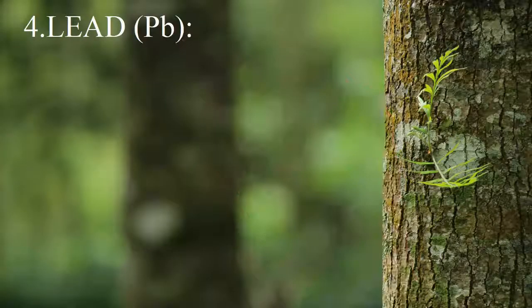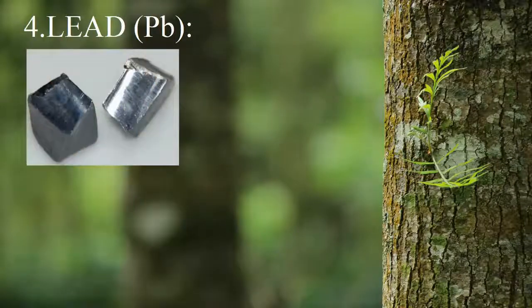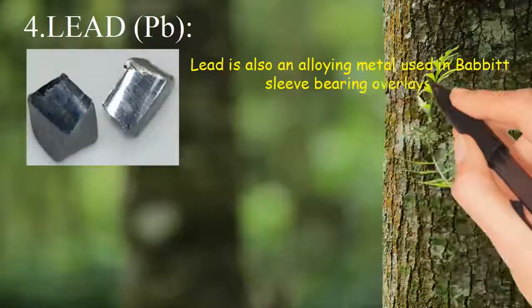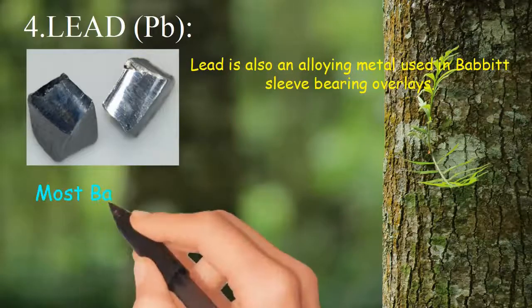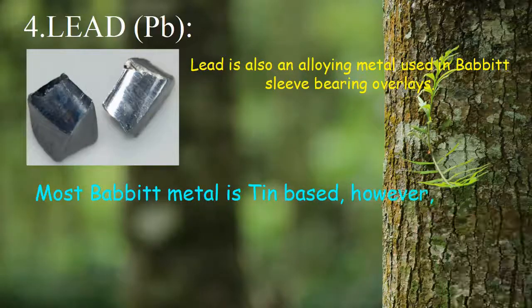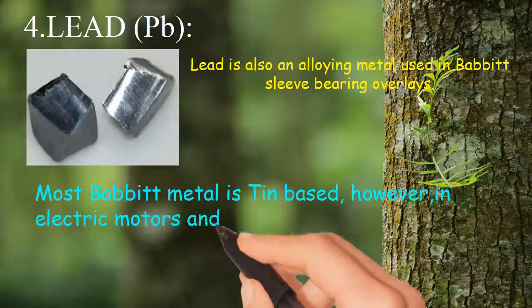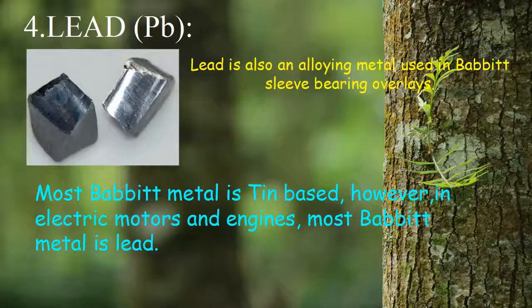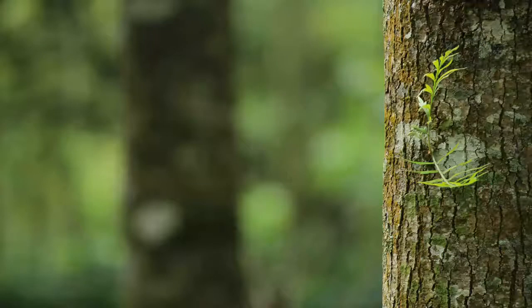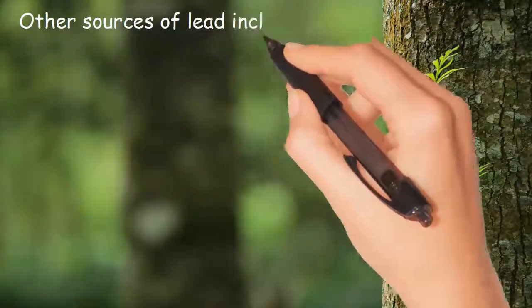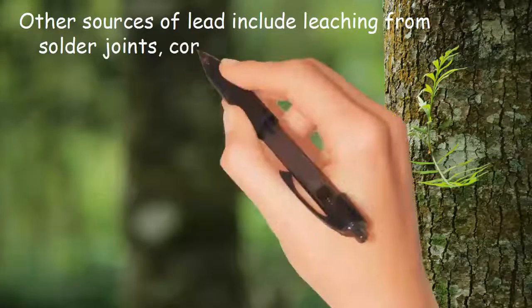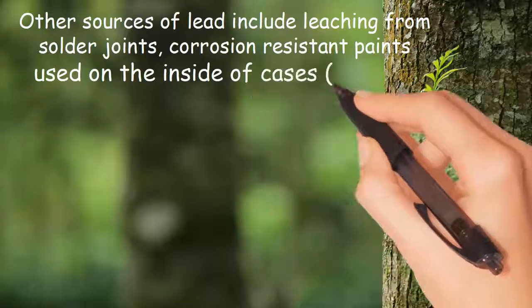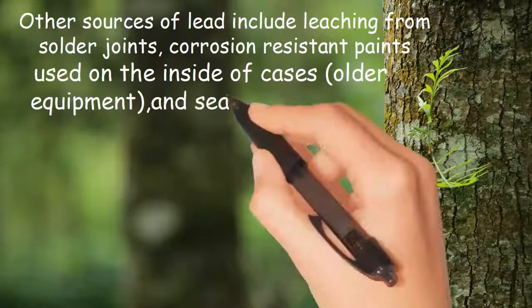Lead. Lead is also an alloying metal used in Babbitt sleeve-bearing overlays. Most Babbitt metal is tin-based; however, in electric motors and engines, most Babbitt metal is lead-based. Other sources of lead include leaching from solder joints, corrosion-resistant paints used on the inside of cases in older equipment, and sealing compounds.